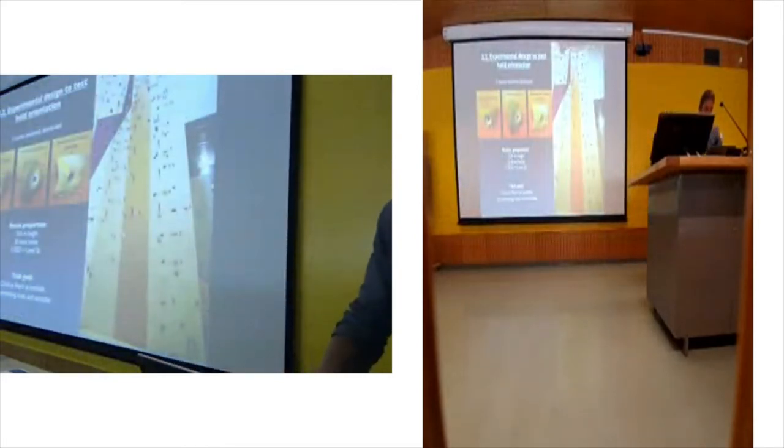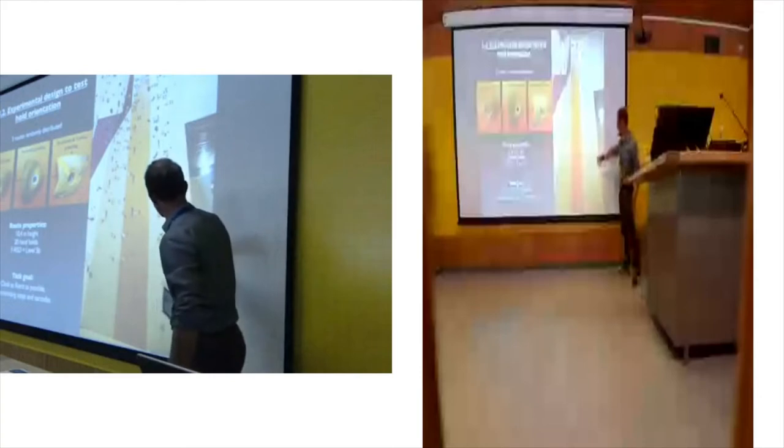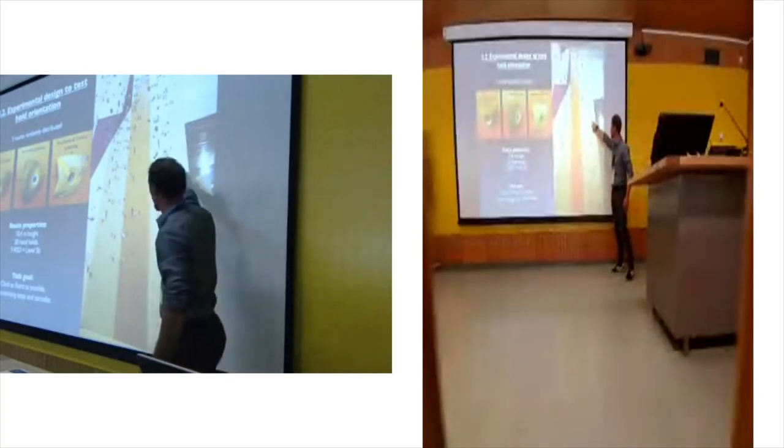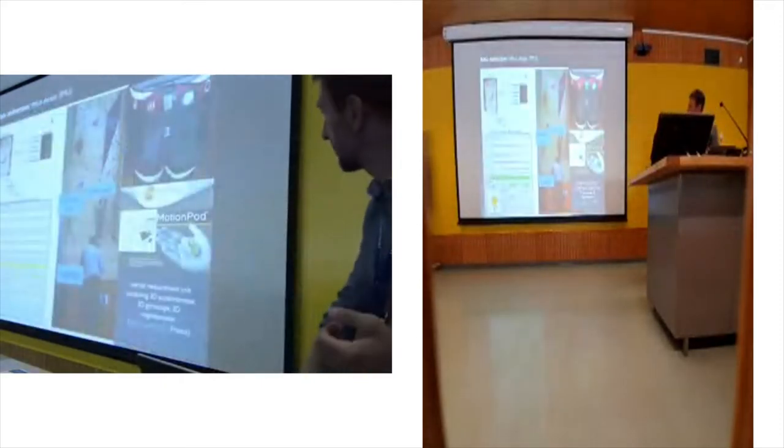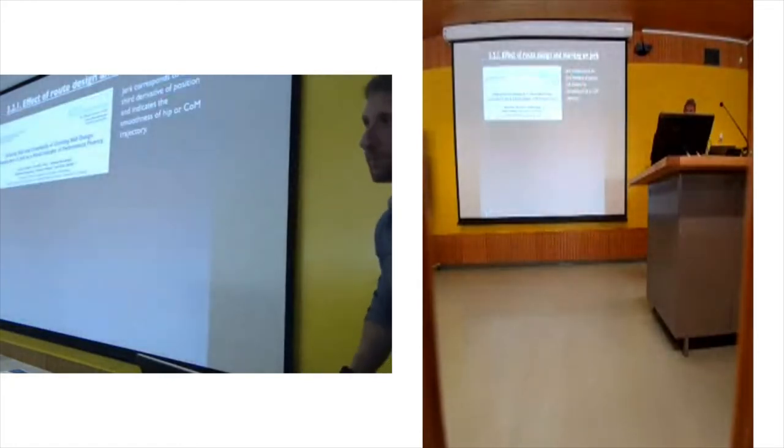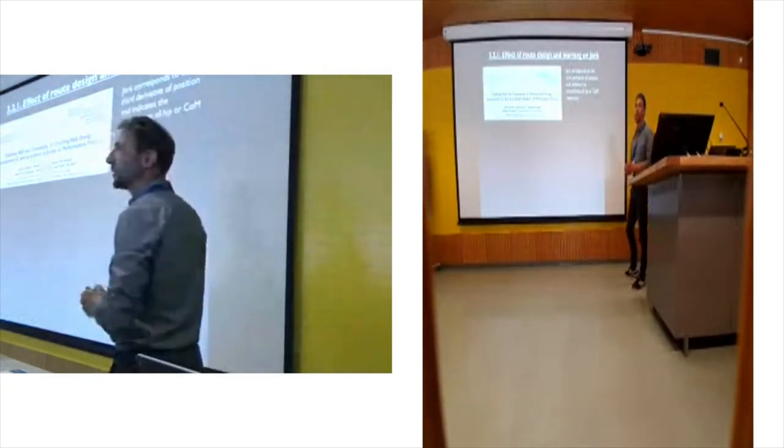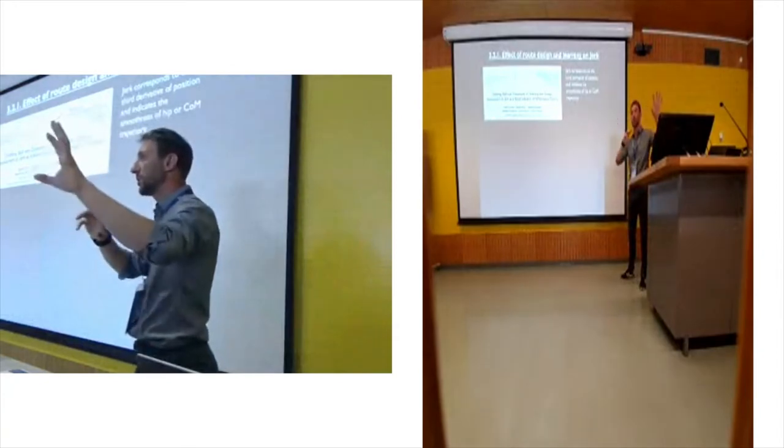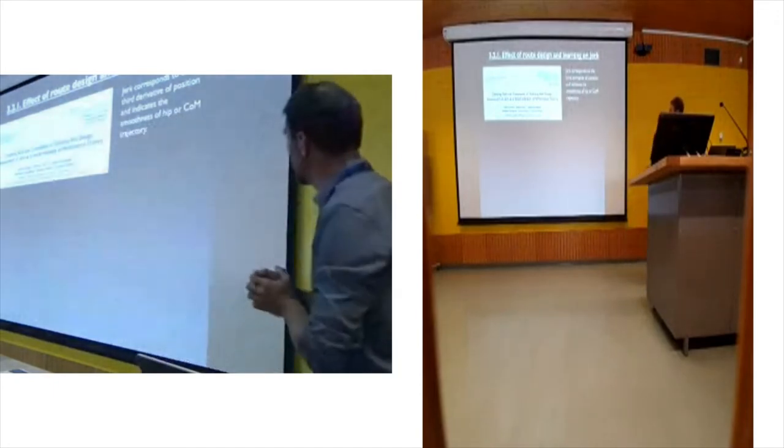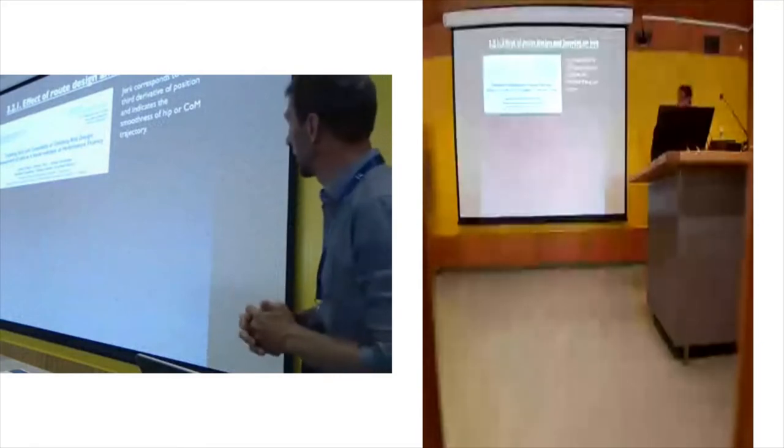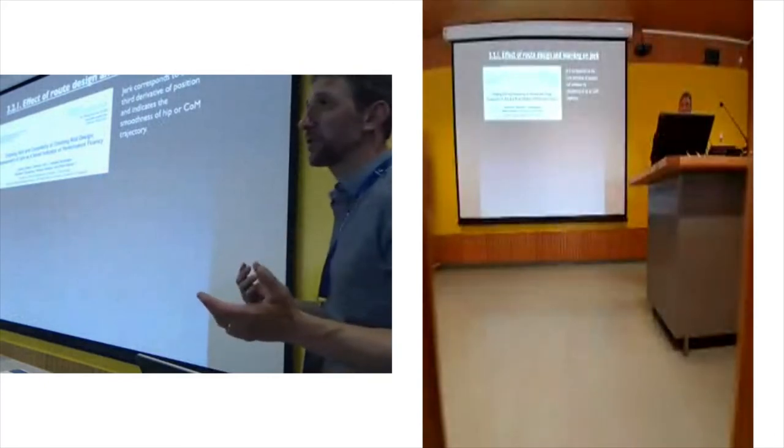When we change the rotation of the hold, the route looks like this - 20 holds, different colors, exactly the same route. I change only the rotation. I use this kind of sensor. Then we assess what we call the jerk. If you are not familiar with this measurement, the jerk is very interesting because it's a spatial-temporal measurement, not only spatial, not only temporal. It's obtained as the third derivative of the position. Roughly, it gives you the smoothness of the hip or the center of mass trajectory.